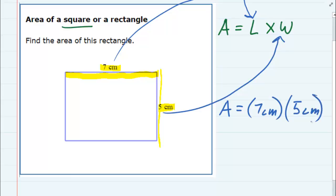When we multiply the 7 and the 5 we get our area is 35, and then the units are centimeters times centimeters, so centimeters squared.